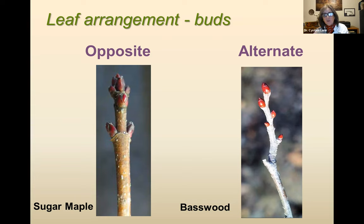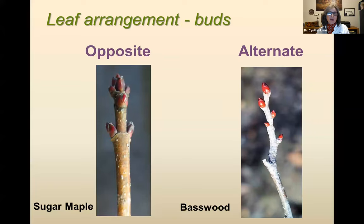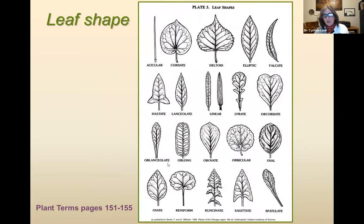There are tons of bud characters you could use — that's a whole talk unto itself. If a twig had opposite buds and you think it could be a maple or ash, there are characters of the buds, terminal buds, and little scars around them that you can use to determine which it is, and there are keys out there for winter twig ID. Leaf shape is a very common thing utilized in keys. There are lots of leaf shapes — pages 151 to 155 in the Plant Identification Terminology book cover these in the category section.